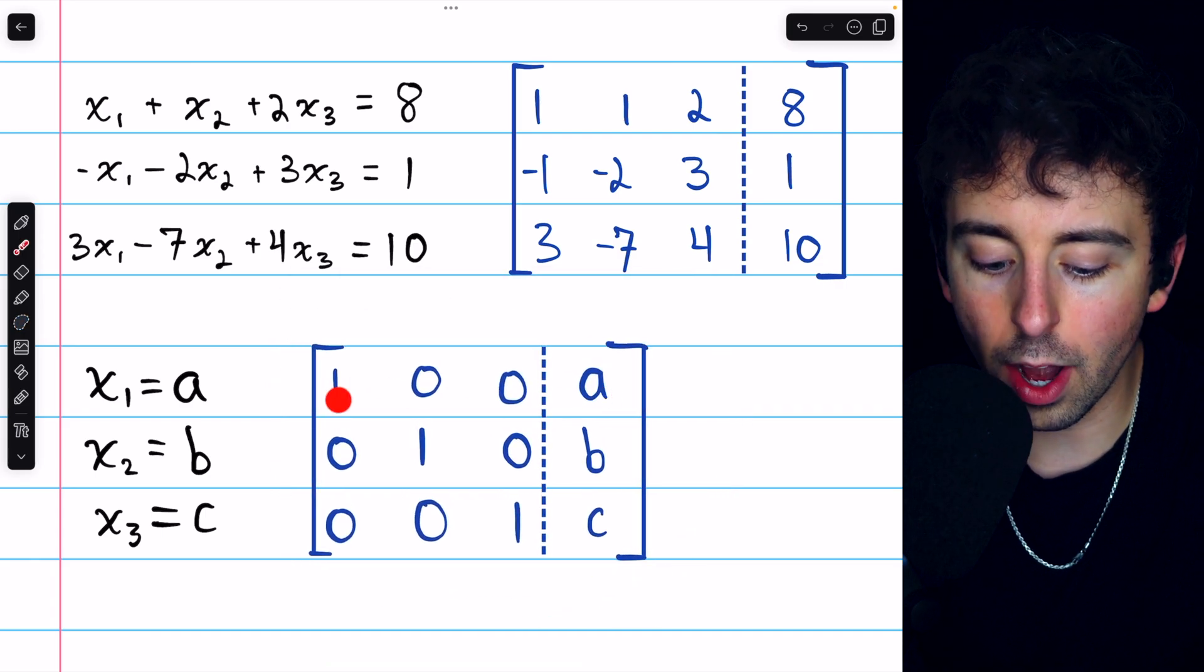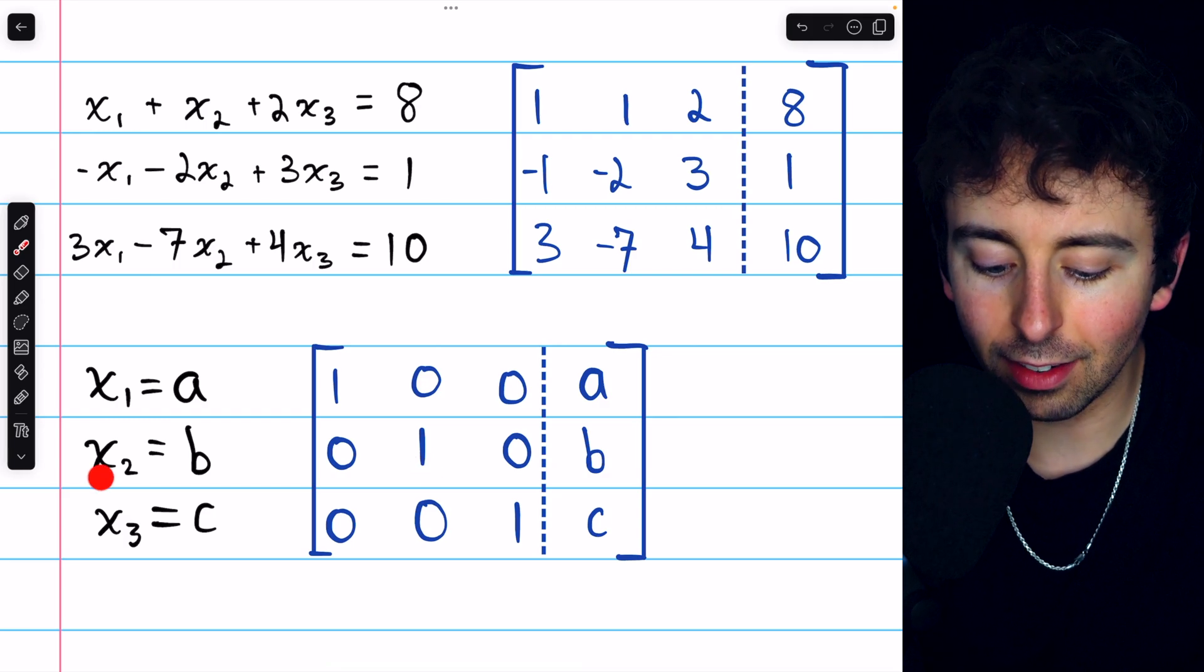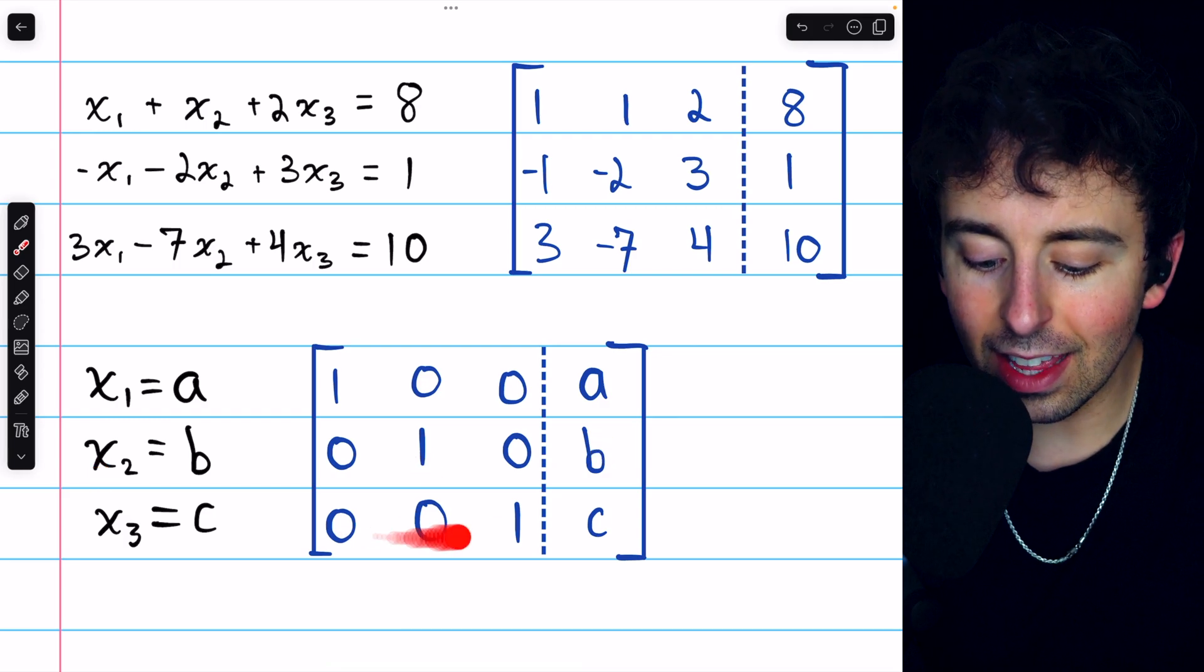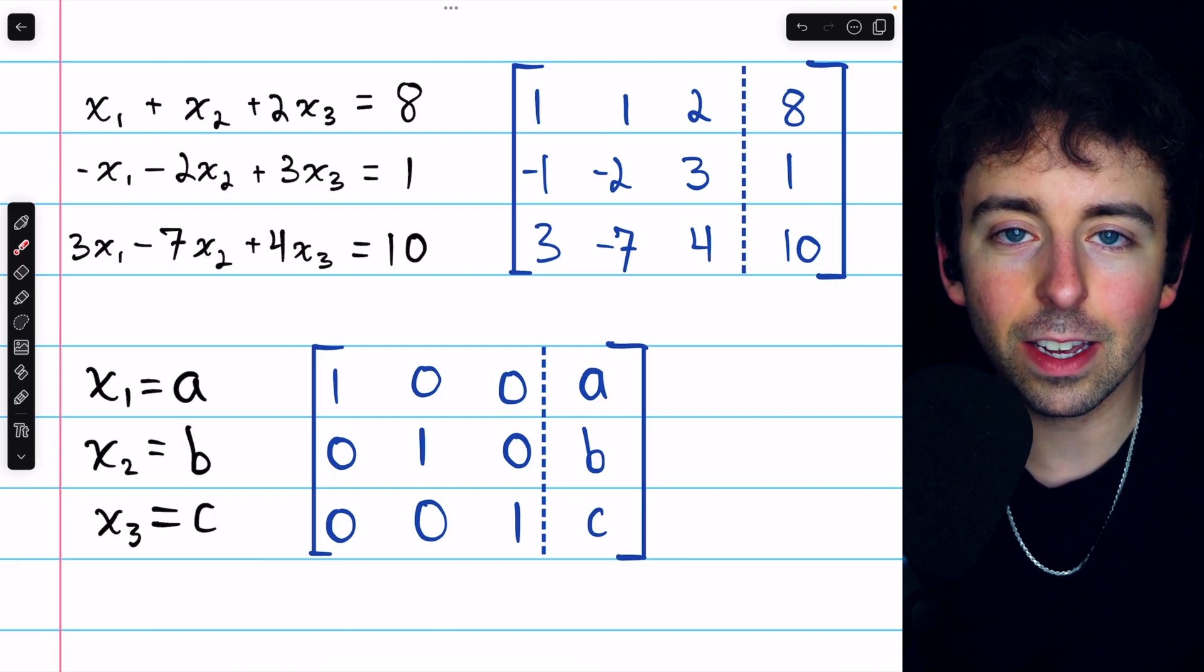This row just tells us that 1x1 equals a. This row tells us that 1x2 equals b. And this row tells us that 1x3 equals c.